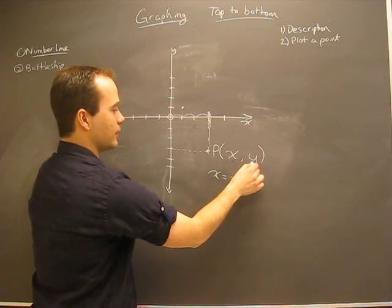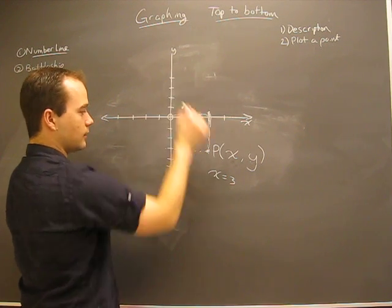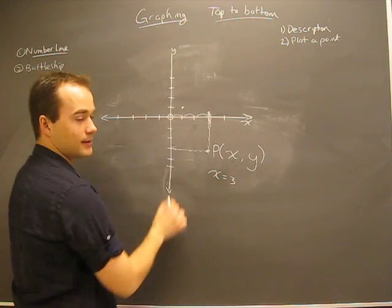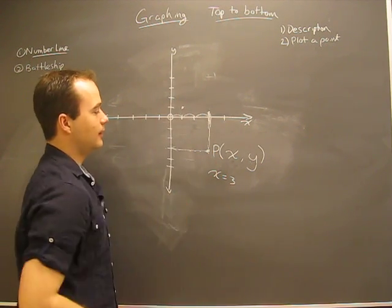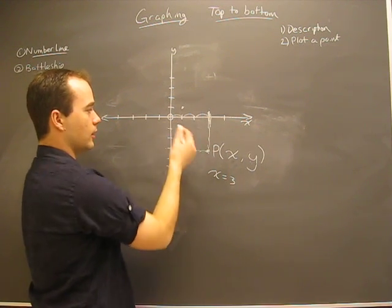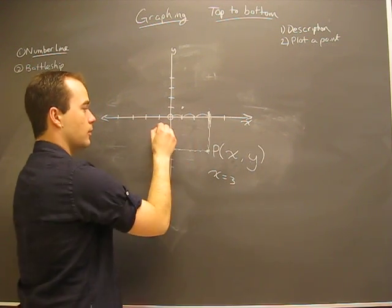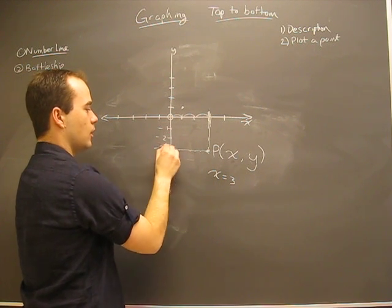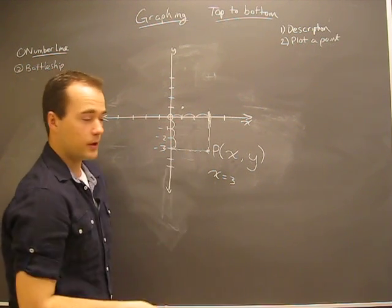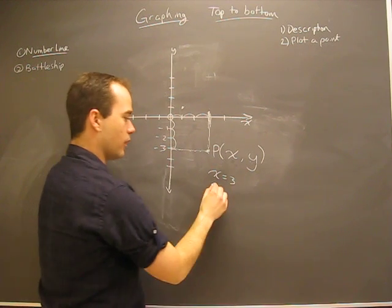Where is its y value? If we draw a line to touch the y-axis — the vertical axis — we can find out that we're going downwards: minus one, minus two, going downwards to three, but it's negative because we've gone downwards.